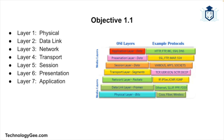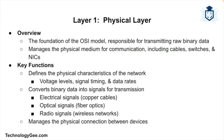In this video we're going to go through the seven layers of the OSI model: the Physical layer, the Data Link layer, Network, Transport, Session, Presentation, and Application. We're going to explore the key functions, protocols, and devices associated with each layer, ensuring you have a clear and practical understanding.